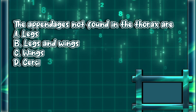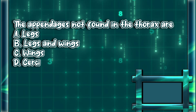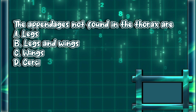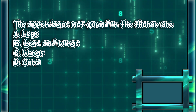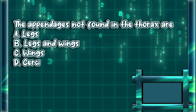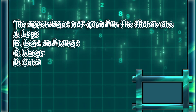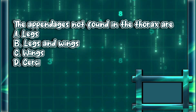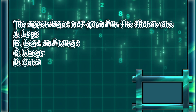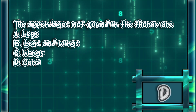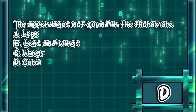The appendages not found in the thorax are. A. Legs. B. Legs and wings. C. Wings. D. Cercus. The answer is letter D.